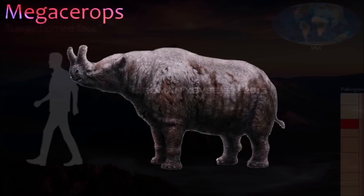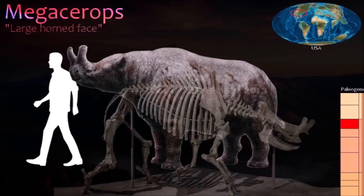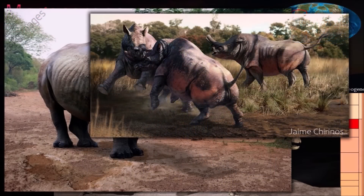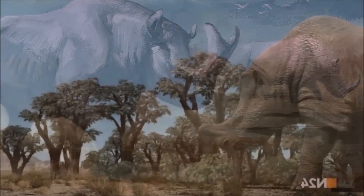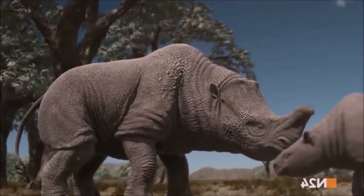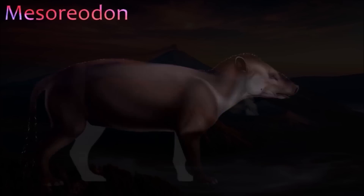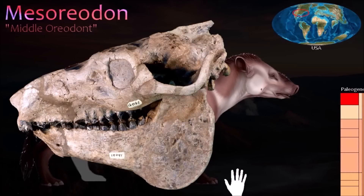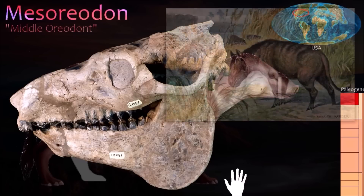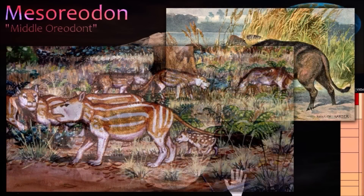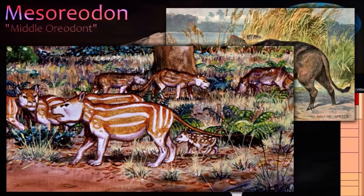Megacerops was the last and largest member of the Brontotheres — meaning 'thunderbeast.' It was the size of a small elephant and lived on the Great Plains of North America. It had a forked horn on its nose that was relatively wide but delicate, so was probably not used for head-to-head fighting. Mesoreodon was an oreodont, an extinct sheep-sized even-toed hoofed mammal. Like other oreodonts, it had sharp canine teeth presumably used for display and defense. Several complete Mesoreodon skeletons have been found, one of which had preserved vocal cords showing it could make loud sounds like modern howler monkeys — hooting calls that may have warned the herd of attacks or frightened off predators.